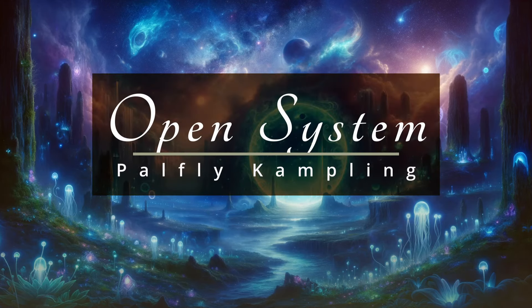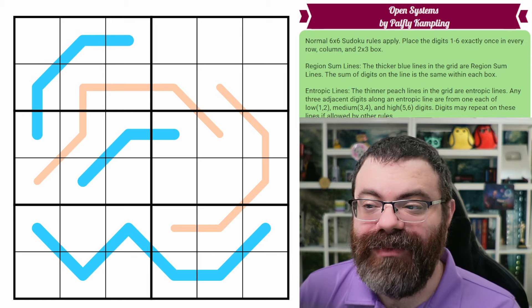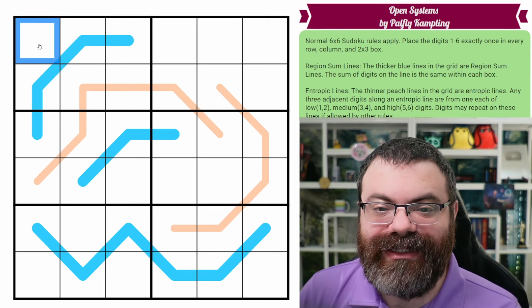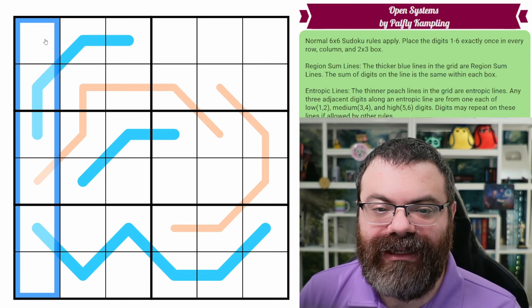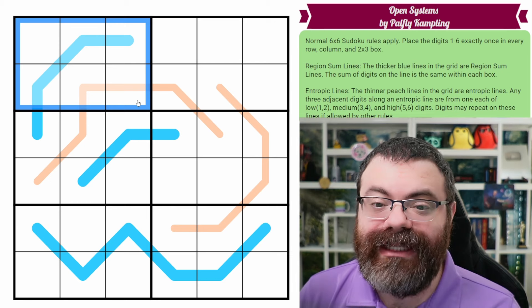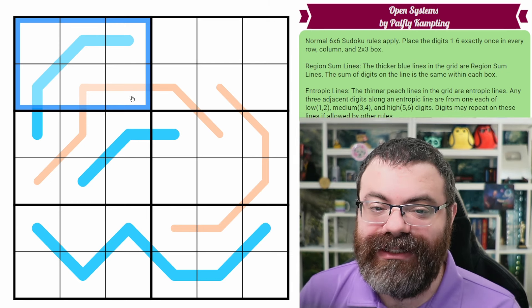Hello! Let's continue our Sudoku adventure with Open Systems by Palfly Campling. So we have normal 6x6 Sudoku rules. That means in every row, every column, and every 2x3 box, we are placing the digits 1 to 6 exactly once each.